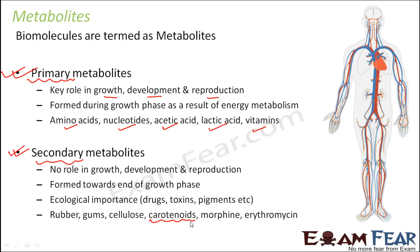You don't really need carotenoid pigment for the growth of the plant or for reproduction, but it serves a different purpose — it helps in storage and gives colors to different parts of the plant. Similarly, erythromycin is a medicine produced from a secondary metabolite. Even though it is not helpful in growth and reproduction, it helps fight against many diseases. So we also need secondary metabolites because they play an indirect role in the survival of living organisms.